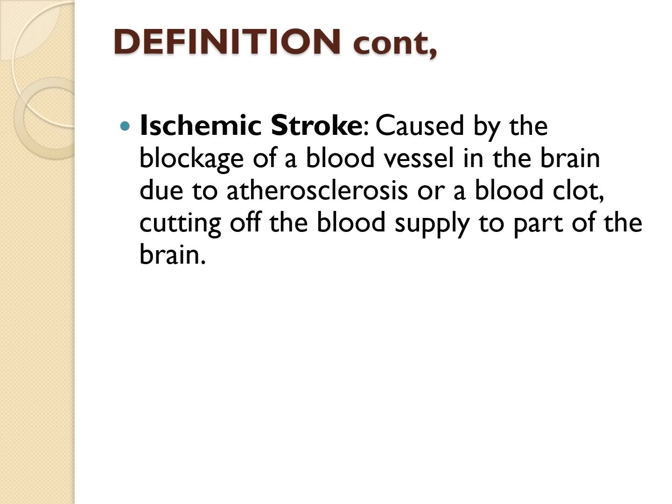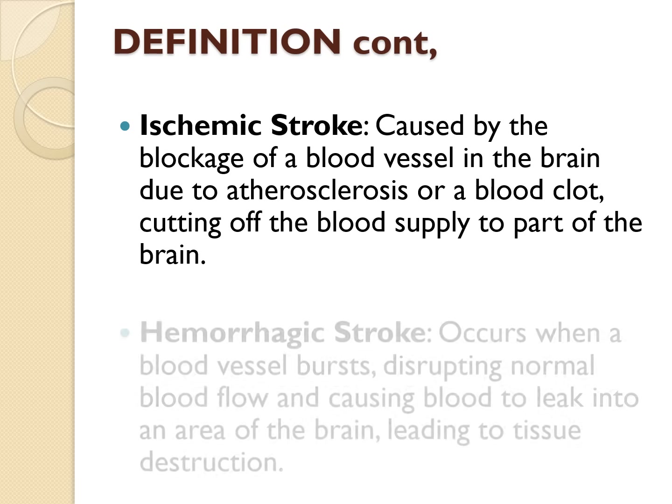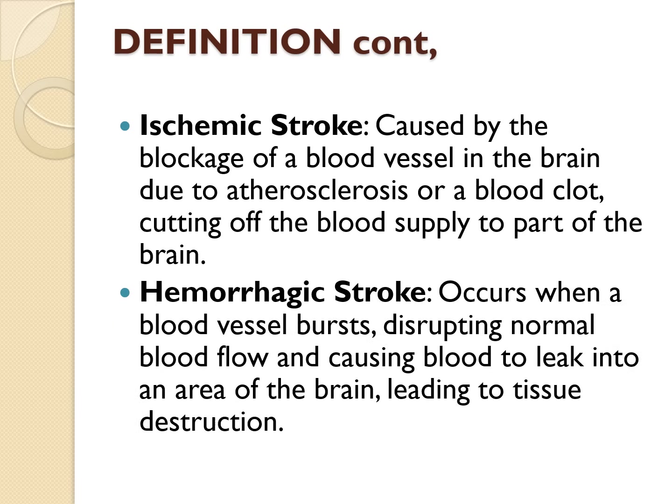In an ischemic stroke, the blood supply to a part of the brain is cut off because there is either atherosclerosis or a blood clot has blocked a blood vessel. In hemorrhagic stroke, a blood vessel ruptures, preventing normal blood flow and allowing blood to leak into an area of the brain and destroy it.